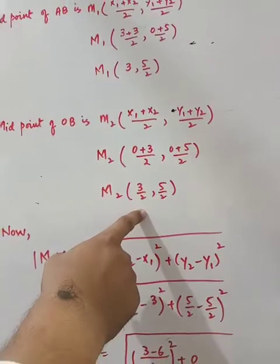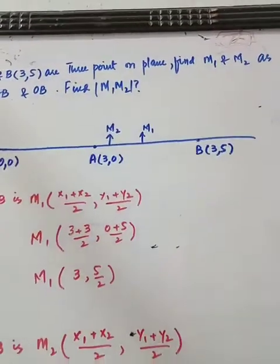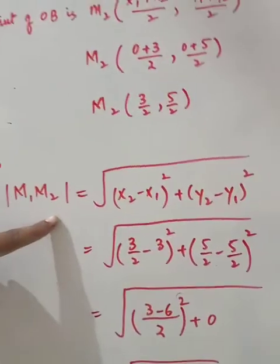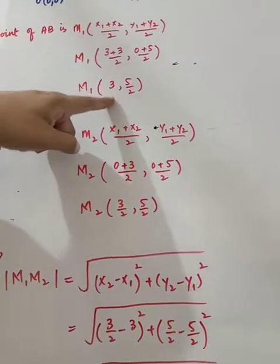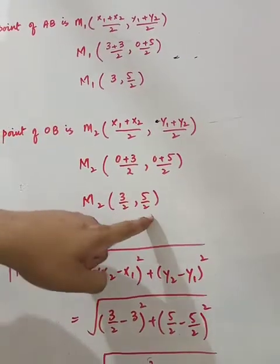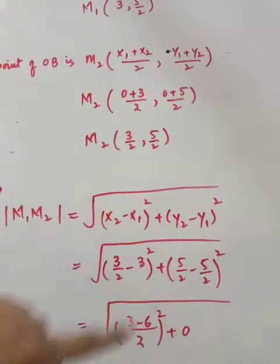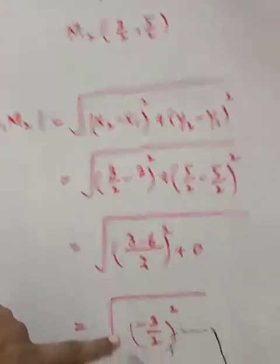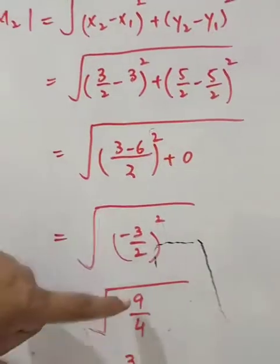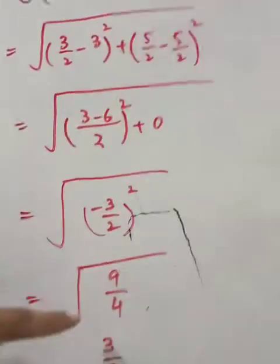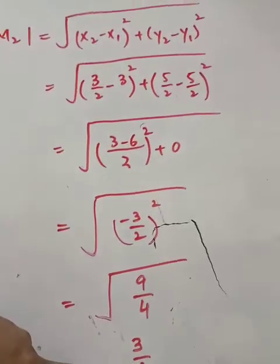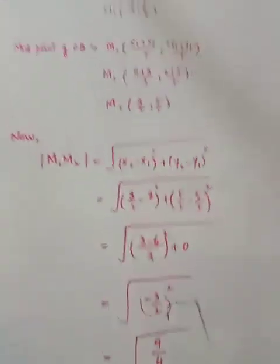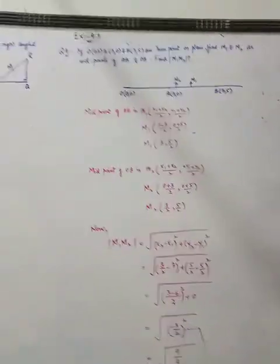Ab M1 aur M2 ke beech distance formula lagaenge. M1 ke points x1 y1, M2 ke points x2 y2. Distance formula se: minus ka square plus 3 ka square — 9, aur 2 ka square — 4. Under root 9 ka 3 aur under root 4 ka 2 — so answer hai 3 by 2. Maintain your copies properly, thank you.